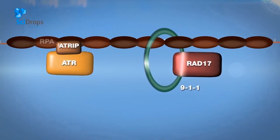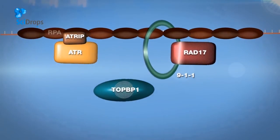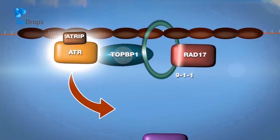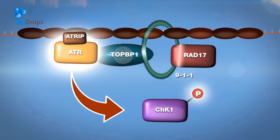Finally, 9-1-1 is able to recruit a protein called TOPBP1, which is a direct activator of the kinase activity of ATR. Activated ATR phosphorylates another kinase called CHK1, unleashing its activity.